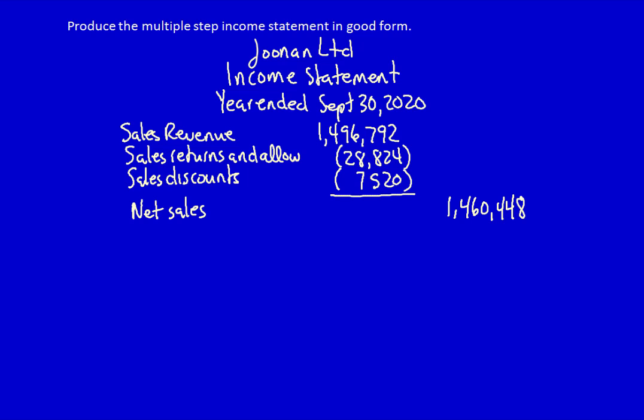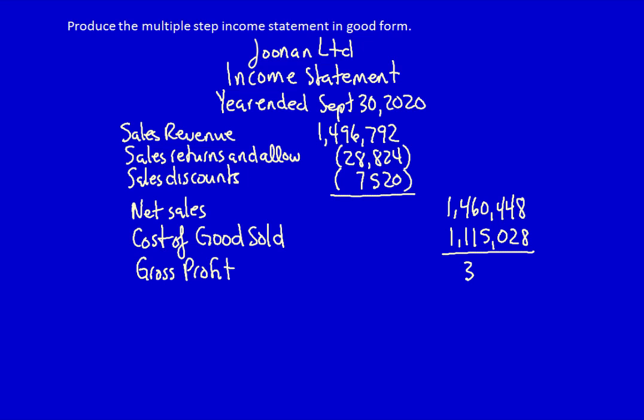I'm putting net sales in a new column for clarity. At this point we're not going to include interest revenue, because interest revenue is not part of the majority of the business the company is involved in. Instead, I'm going to take cost of goods sold away from net sales. Remember, cost of goods sold is the only expense account that doesn't use the word 'expense' — $1,115,028. Taking the difference gives us gross profit: $345,420, which is the amount of profit available from the major source of income, which in this case is selling products.